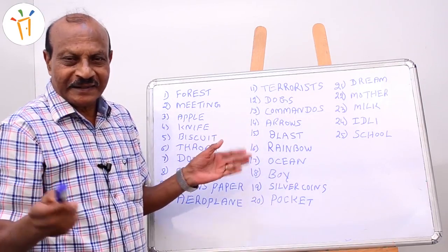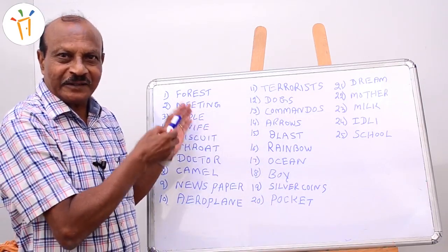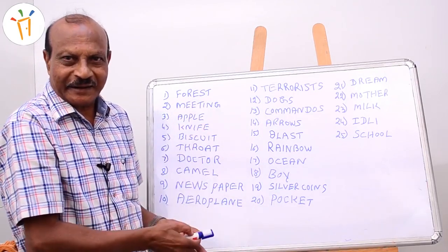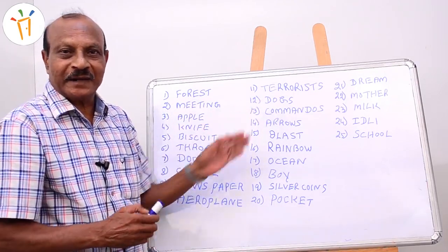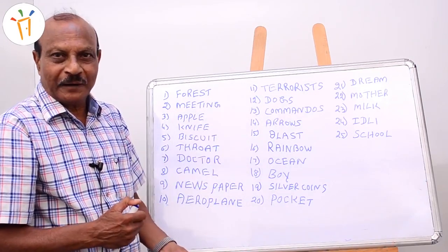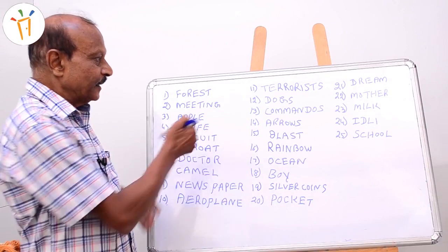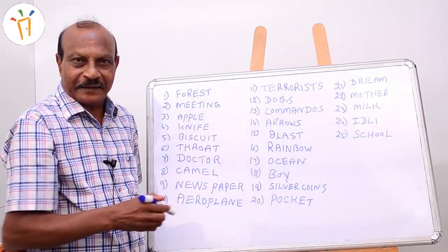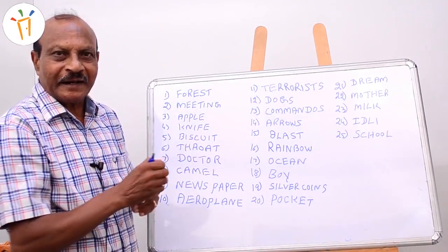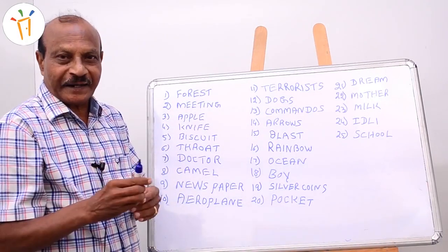These are 25 different words given by students during a class, and I have written them here. To memorize these words and recall them without seeing the board, you have to build up a peculiar story using this memory technique. There are 25 words, and the story connects them all.